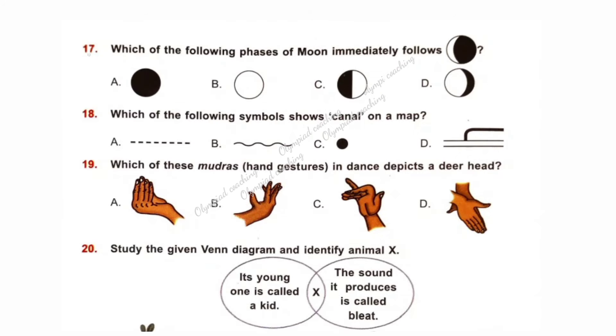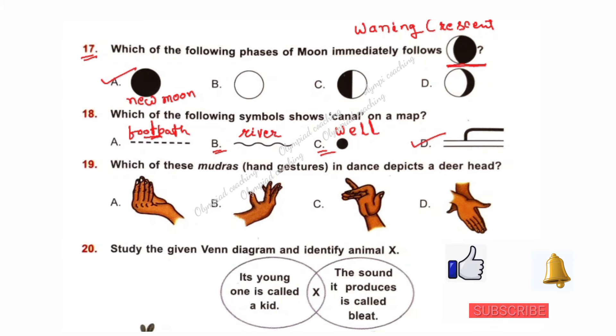Question number 17. Which of the following phases of moon immediately follows this? The given picture is waning crescent of moon. It is immediately followed by new moon phase. So, option A is correct. This is the phases of moon. Question number 18. Which of the following symbols shows canal on a map? Option D is correct. A represents footpath, B river and C well. Question number 19. Which of these mudras in dance depicts a deer head? Option C is correct.